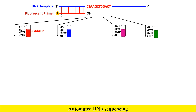In the first test tube we add dideoxy ATP (ddATP), in the second dideoxy CTP (ddCTP), in the third dideoxy GTP (ddGTP), and in the fourth dideoxy TTP (ddTTP). Wherever these dideoxy nucleotides incorporate into the new strand, they stop DNA synthesis and produce fragments of specific lengths.